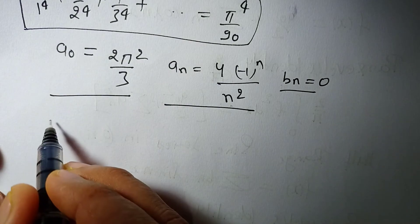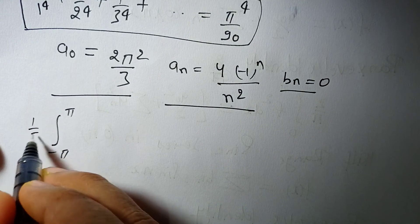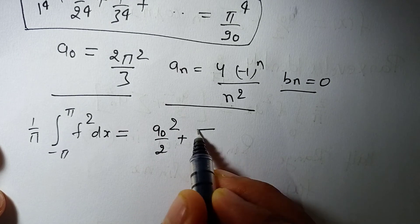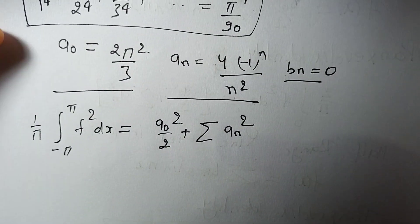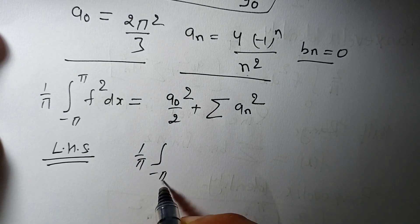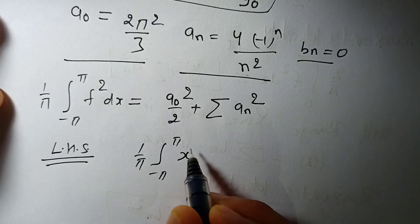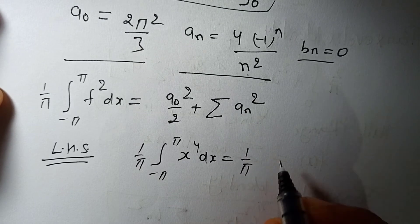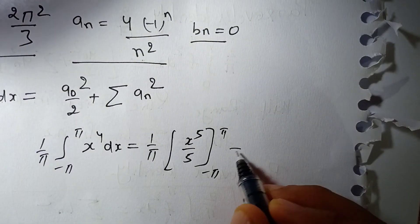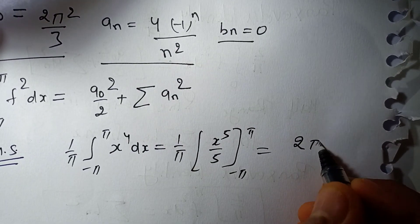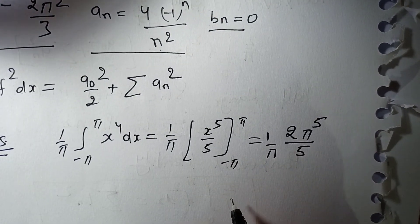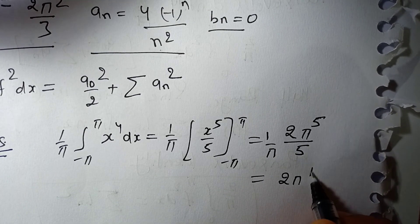Now let us apply Parseval's Identity: (1/π)∫₋π^π f² dx = a₀²/2 + Σ aₙ². For the left-hand side: (1/π)∫₋π^π x⁴ dx = (1/π)·[x⁵/5]₋π^π. Simplifying, we get (1/π)·(2π⁵/5) = 2π⁴/5.